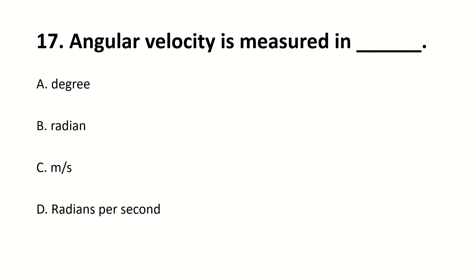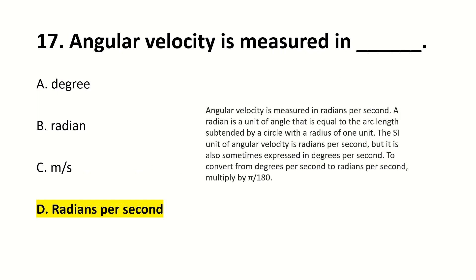Entropy is the measure of — right answer is the degree of disorder or randomness in a system. Angular velocity is measured in — right answer is D, radian per second.